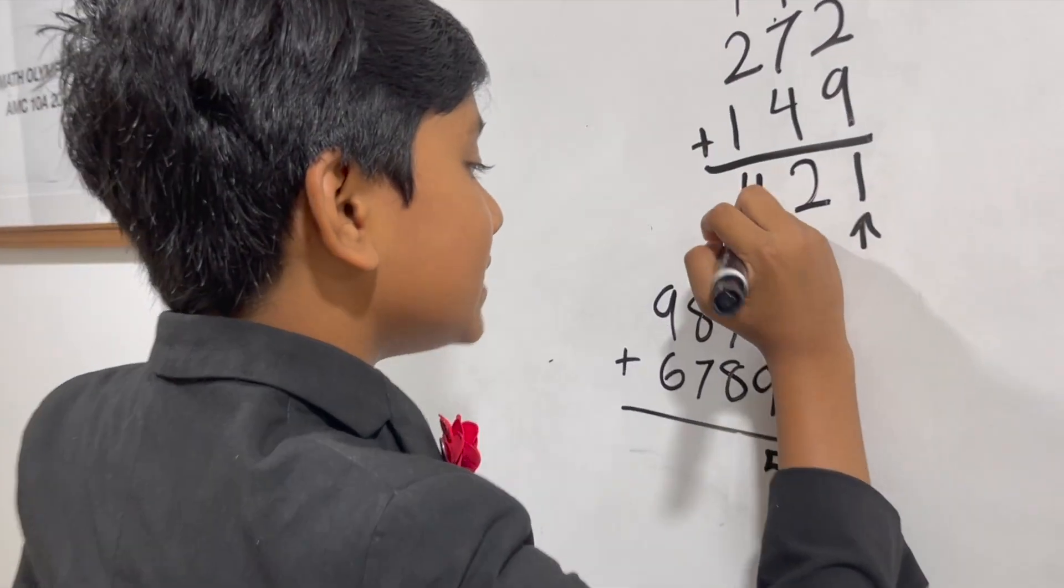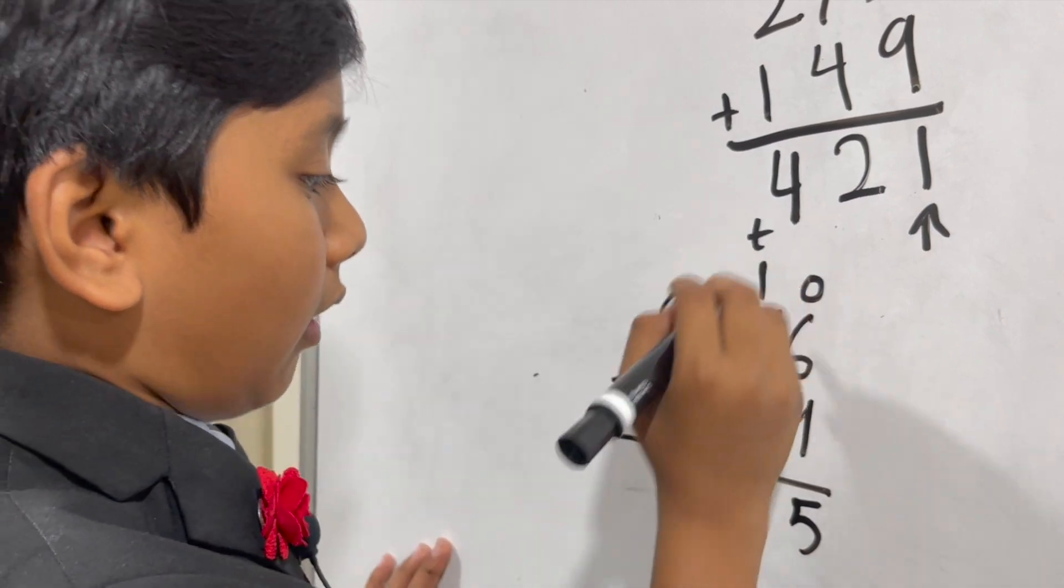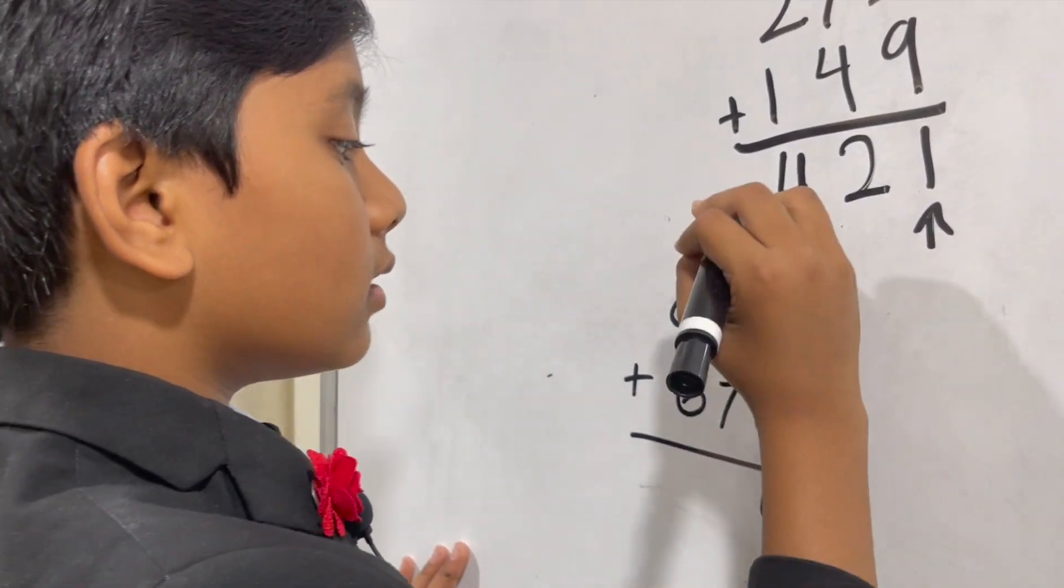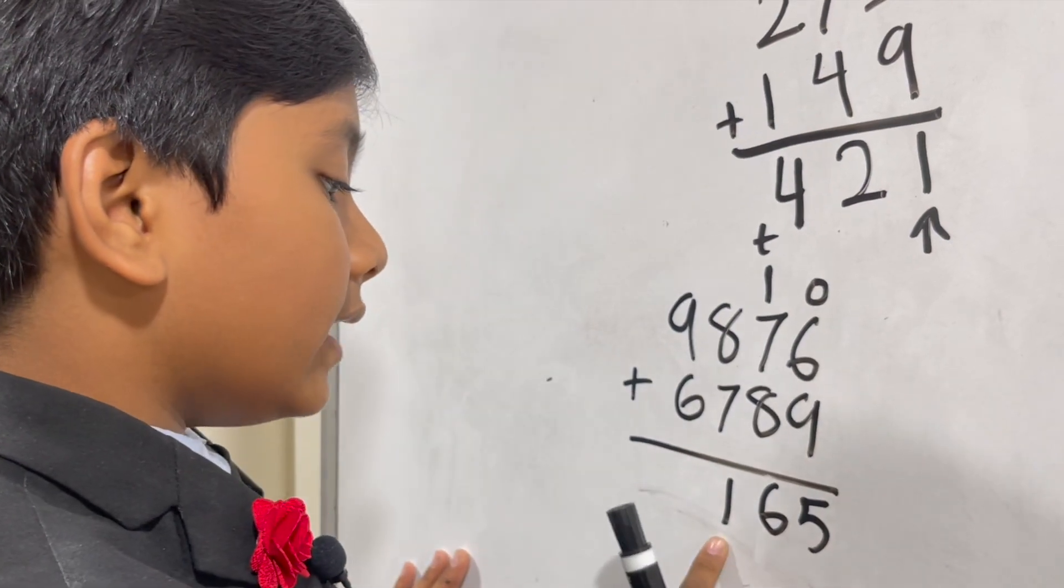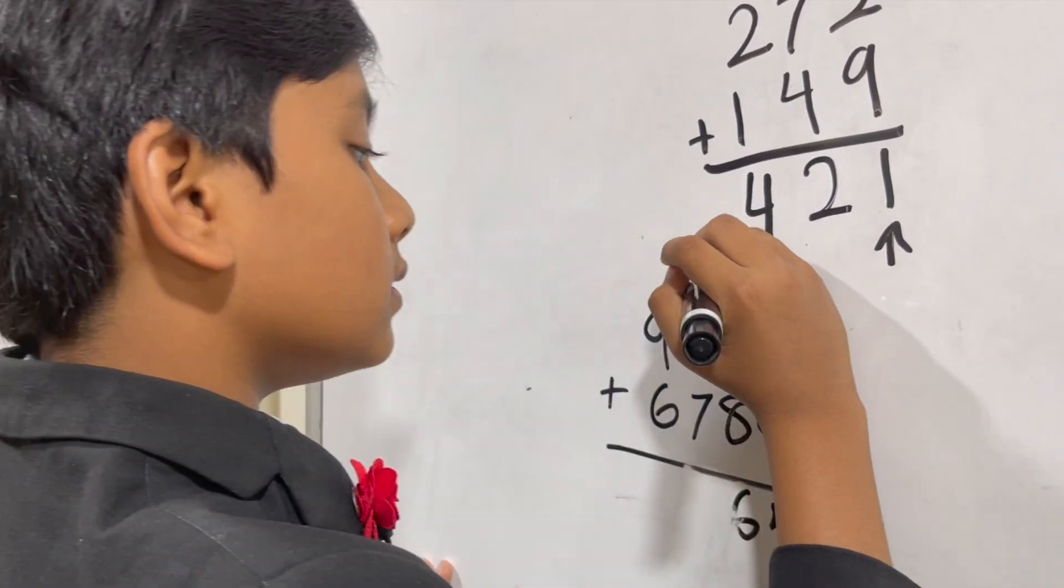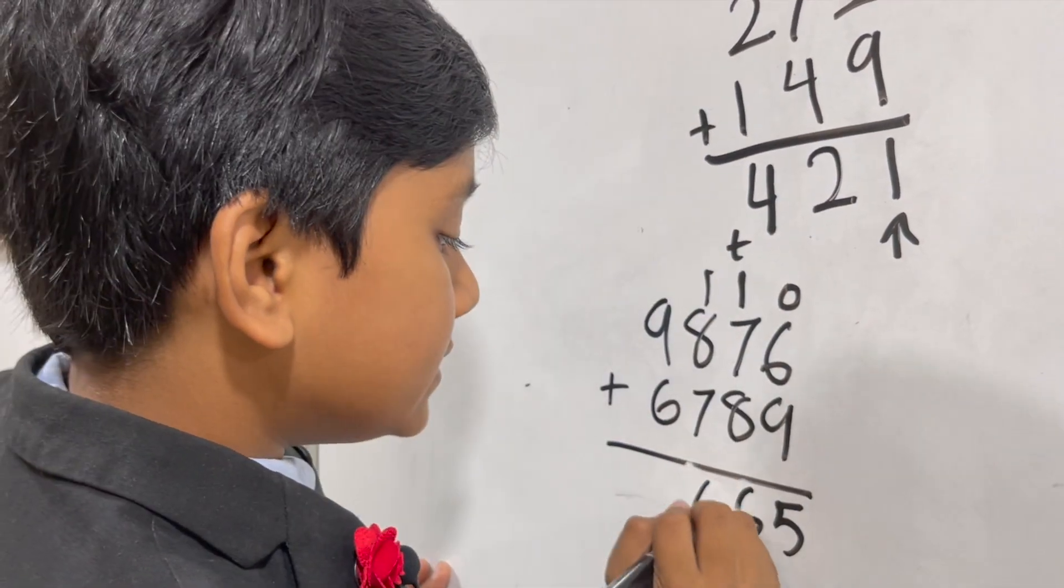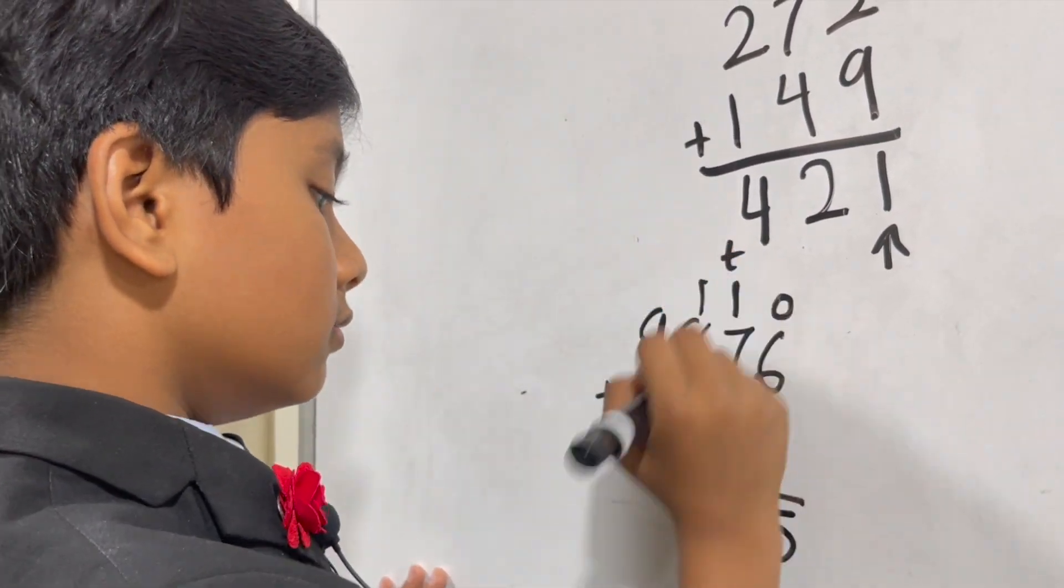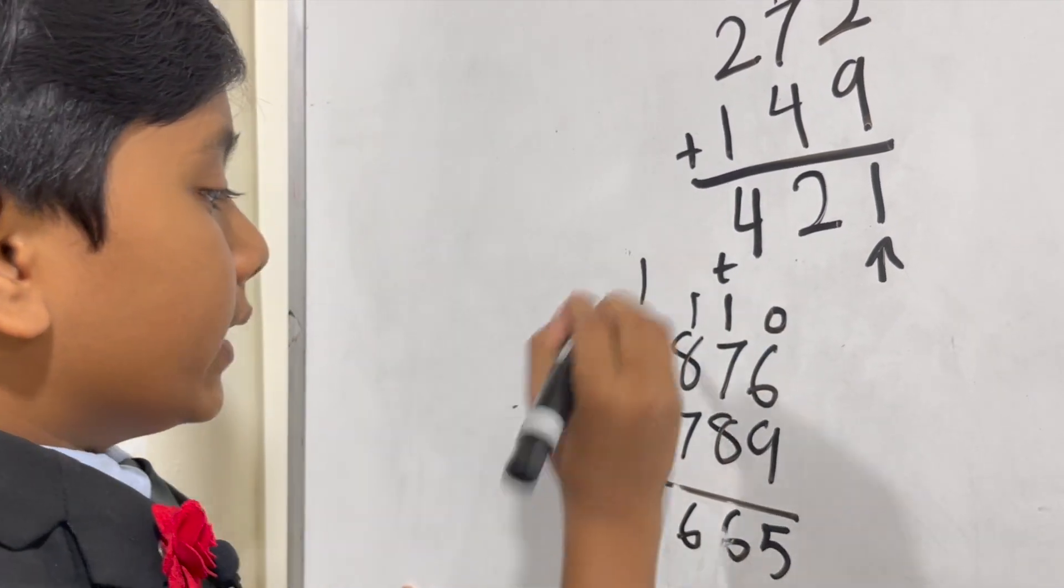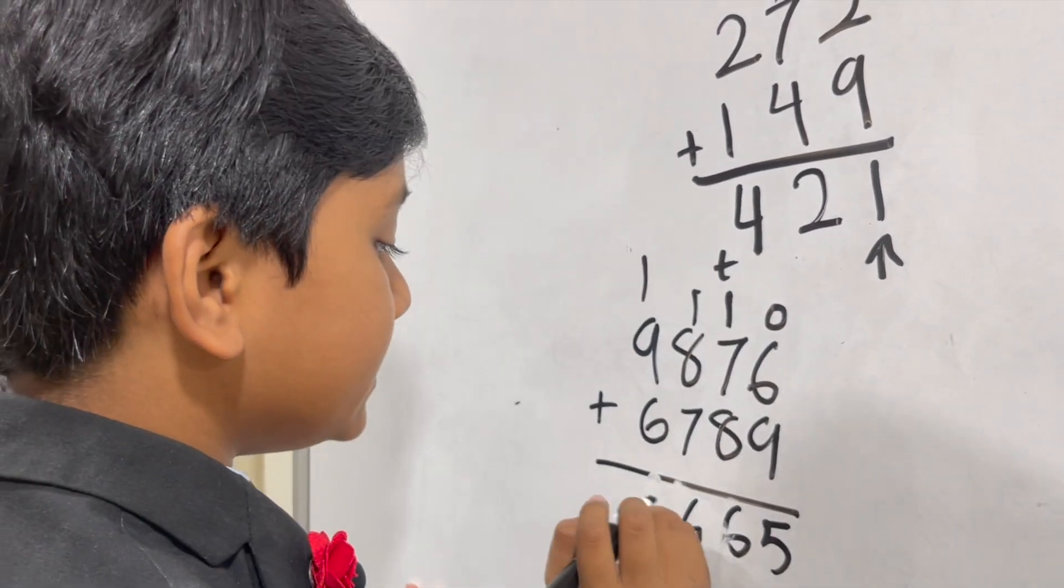So one plus seven plus eight in the tens spot is going to give us 16. So we once again take the one and put it up. One plus eight plus seven is 16, we take the one and put it up. One plus nine plus six is 16.